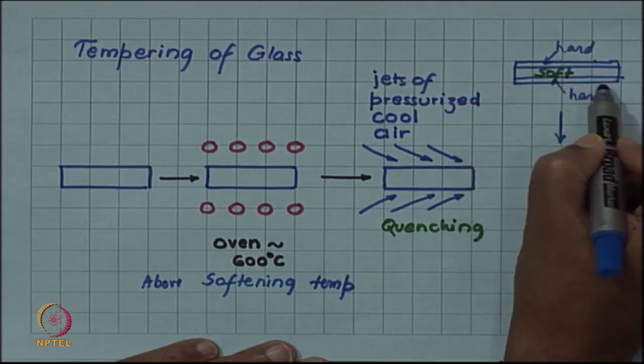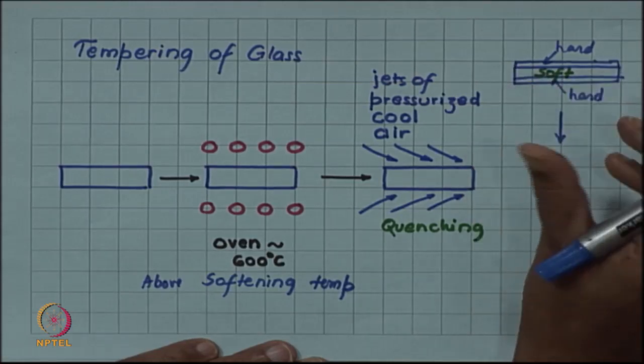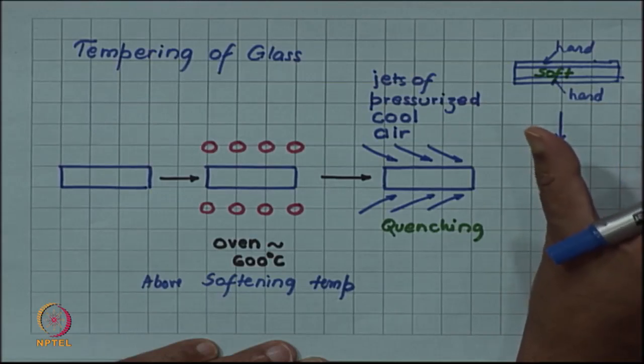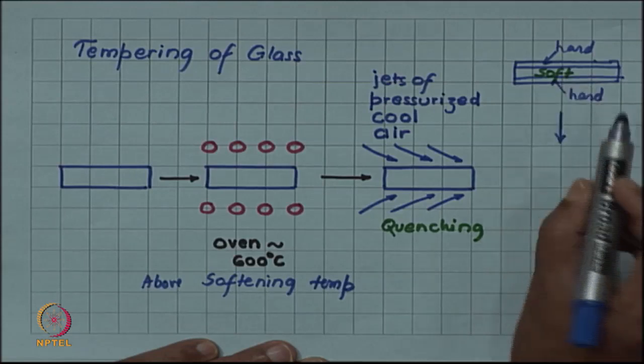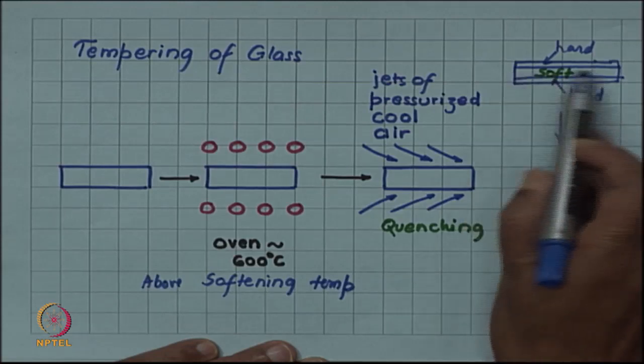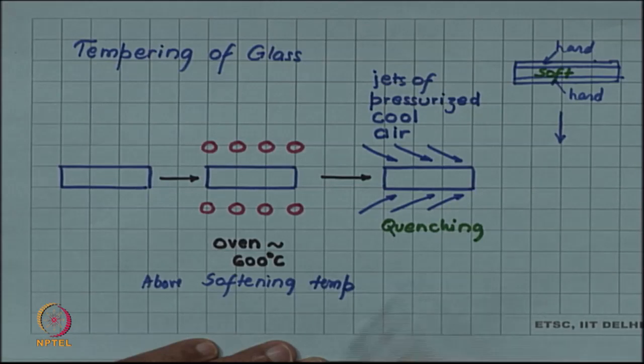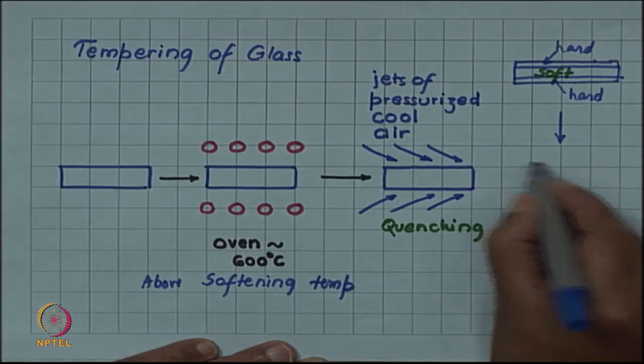When the outer surface contracted, inside was soft, so there was no resistance to its contraction. It contracted easily. But when the inner surface wants to contract, it is encased by the outer hard layer and so that resists its contraction.